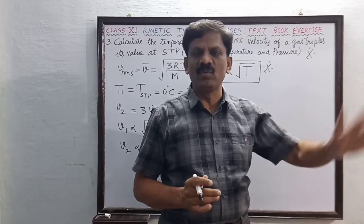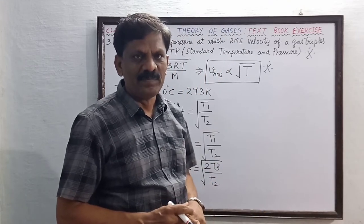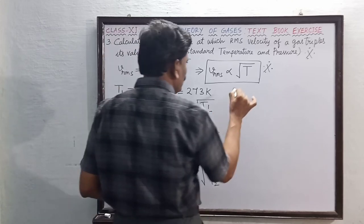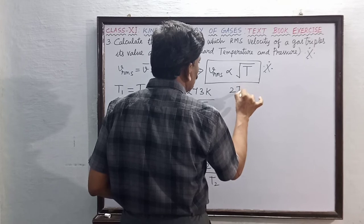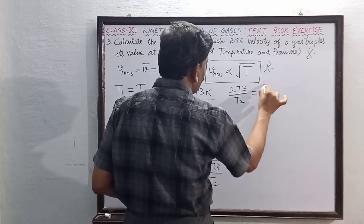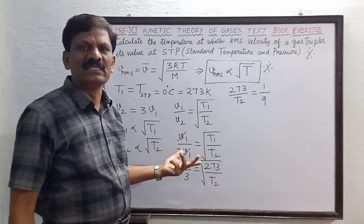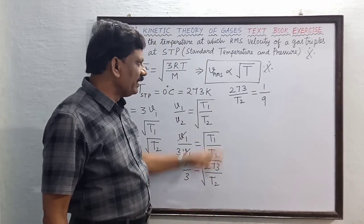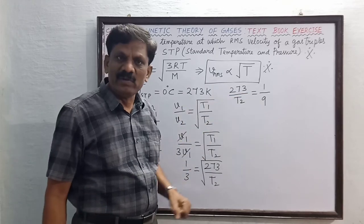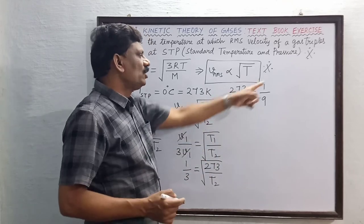Right side square root vanishes. Left side (1/3) whole square equals 1/9. Then 273 divided by T2 is equal to 1/9. Cross multiplying, T2 is equal to 9 times 273.